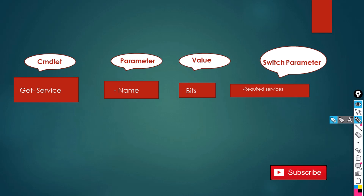In this case, Get-Service is a commandlet — I can say this because it starts with a verb and ends with a noun. Anything that starts with a verb and ends with a noun is a commandlet in PowerShell. It is then followed by the dash-Name parameter. I can say this is a parameter because it starts with a dash — anything starting with a dash is a parameter in PowerShell scripting.